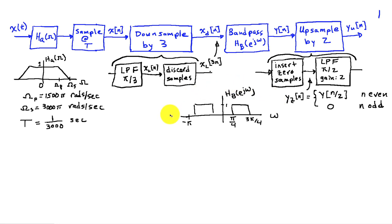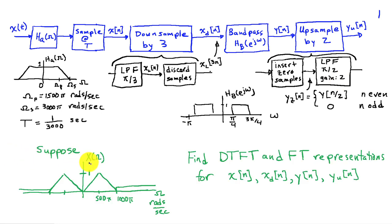The bandpass filter has a pass band from π/4 to 3π/4 radians. For upsampling, we first insert zero values, and since we're upsampling by a factor of 2, we insert a zero between every existing sample of y(n), then pass that through a low-pass filter with cutoff π/2 and a gain of 2. Our input signal has a spectrum with a peak at 500π in a triangle shape, and flat from 1000π on up. We're going to find the DTFT and Fourier transform representations for x(n), x_d(n), y(n), and y_u(n).